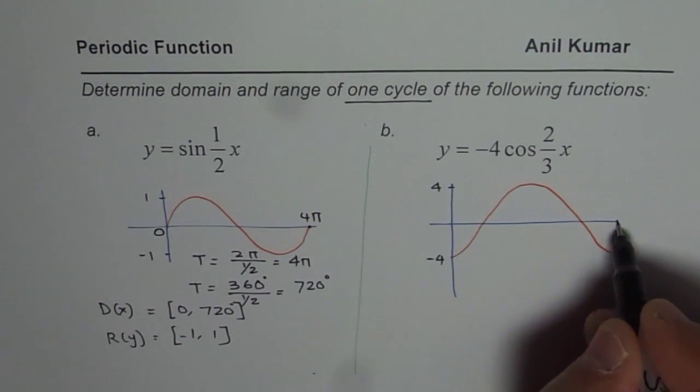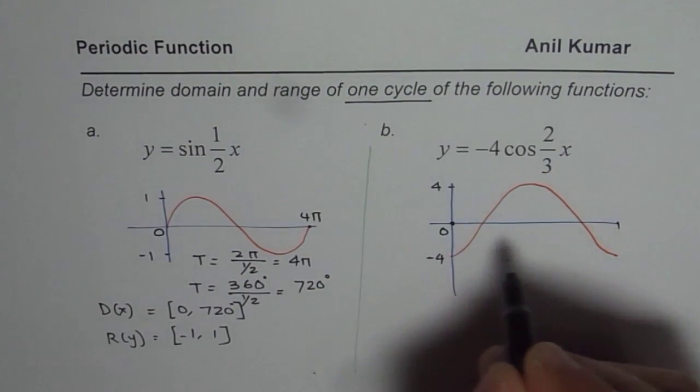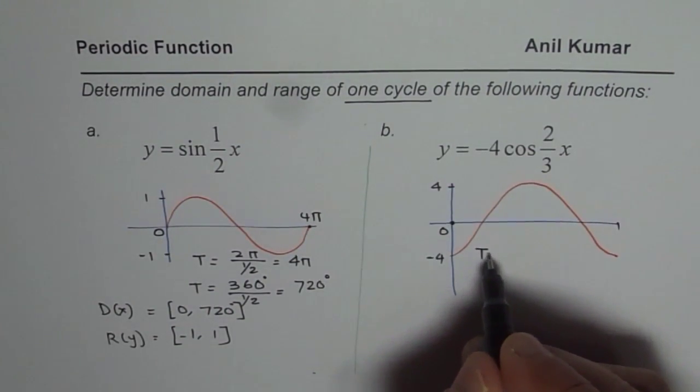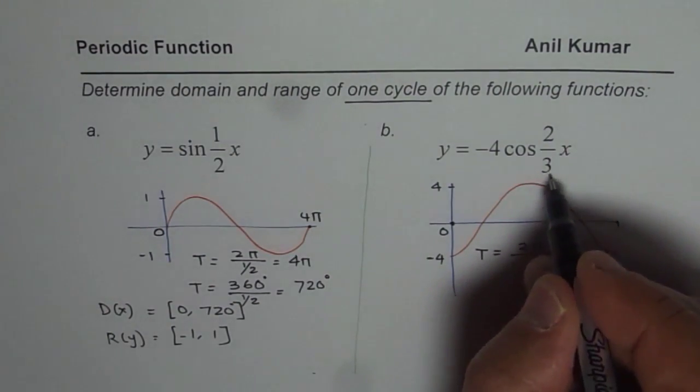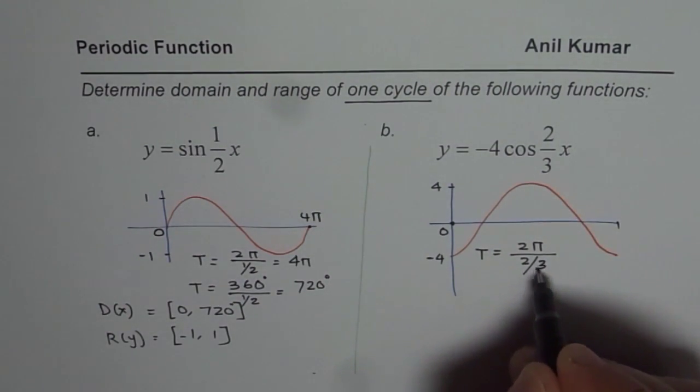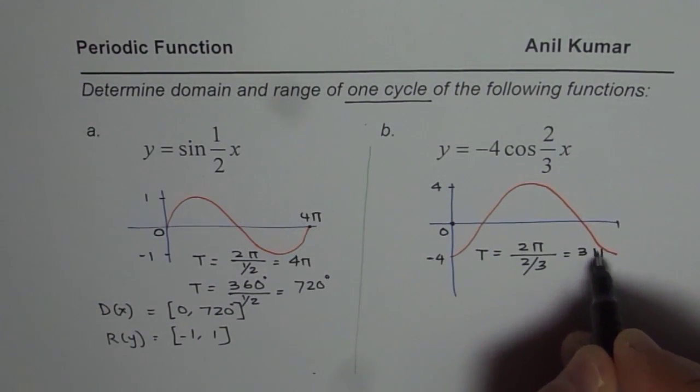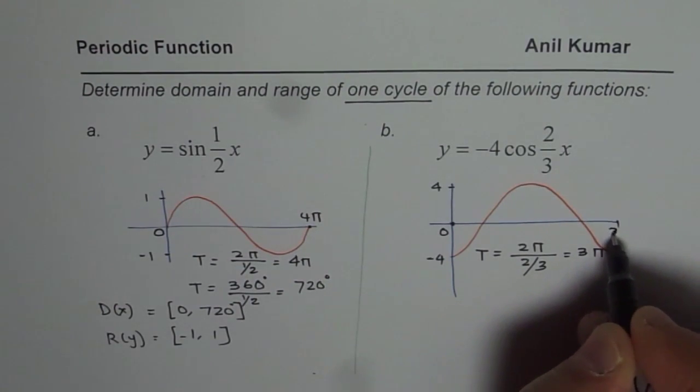Time period will be starting from 0 to, let us calculate, T equals 2π divided by 2 over 3. That is equals to 3π, so 3π is the time period.